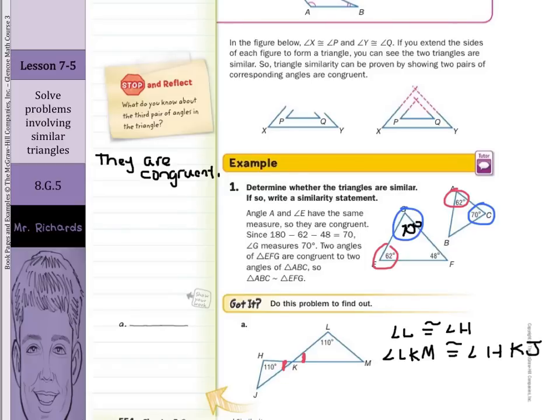H, K, J. So, that's this angle. And since we have two congruent angles, we can say triangle JKH is similar to triangle MKL.